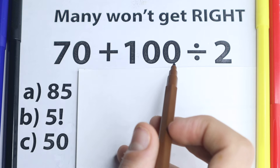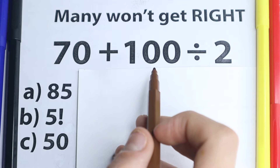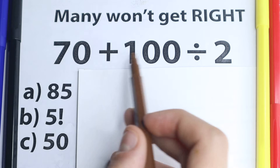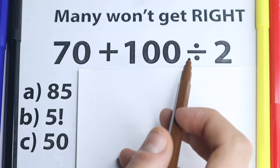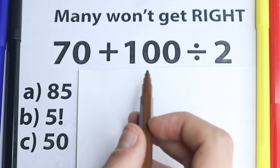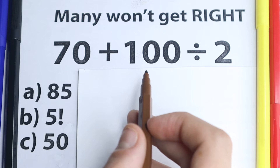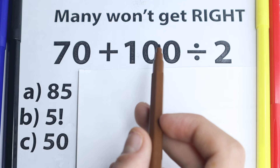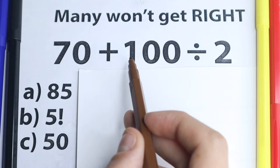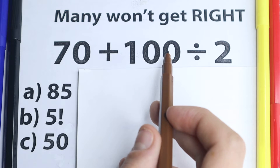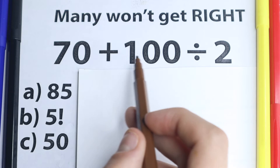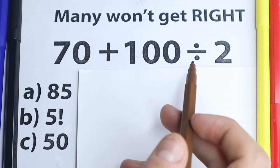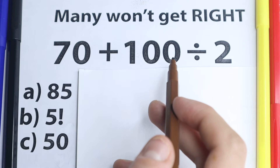70 plus 100 divided by 2. This is a very simple question — we have addition and division. Everyone learns this in third or fourth grade. We don't have huge values, no thousands, no parentheses, no exponents. So what is the correct answer? What do you think?